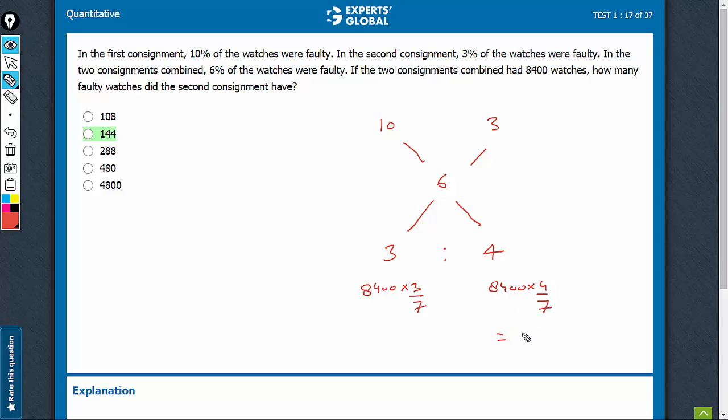So 4800 is what it turns out to be, the number of total watches in the second consignment, out of which 3% were faulty.